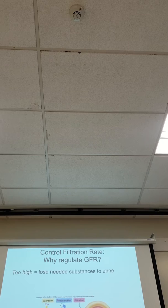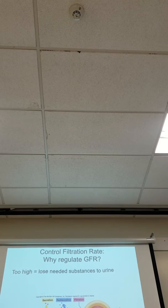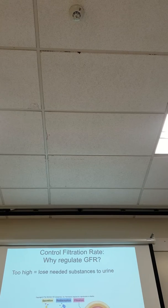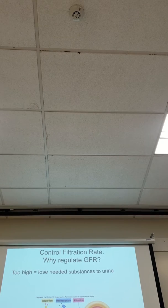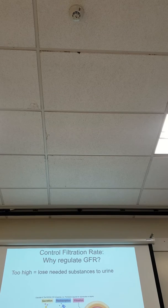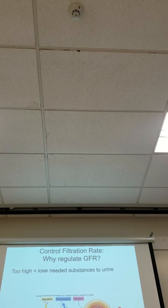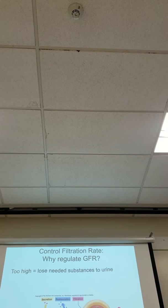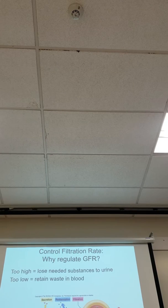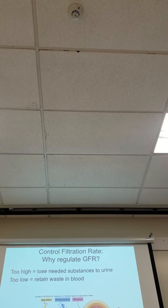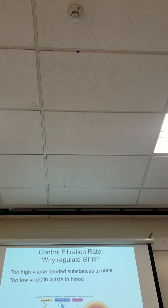So we want to figure out how we make sure we keep up that pressure. Here's the problem: if we start filtering too fast — let's say your kidneys are on overdrive — you're going to start to lose a lot of the needed substances to urine. The water, glucose, sodium, chloride — if it's going through too fast, it's going to stay in the tube and you'll urinate it out. If it's too slow, you're going to start to retain more waste in the blood.